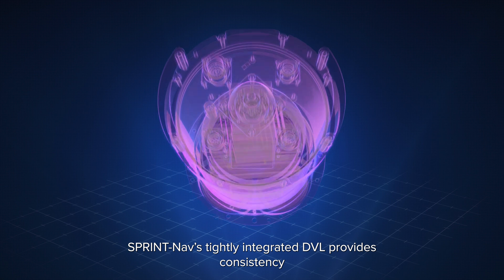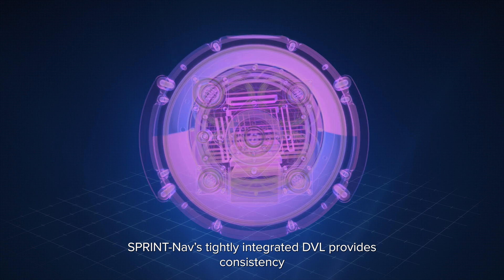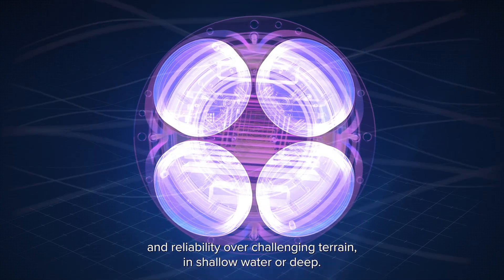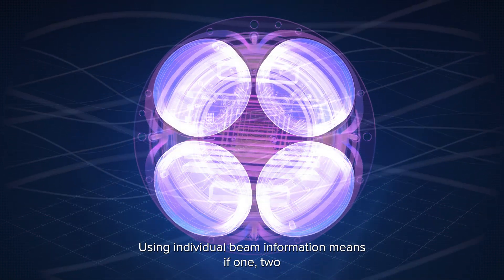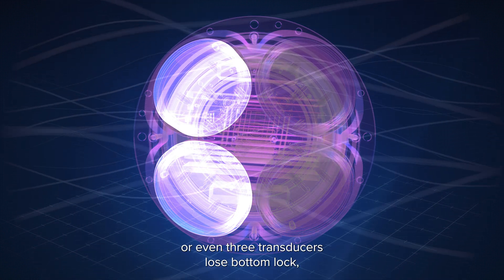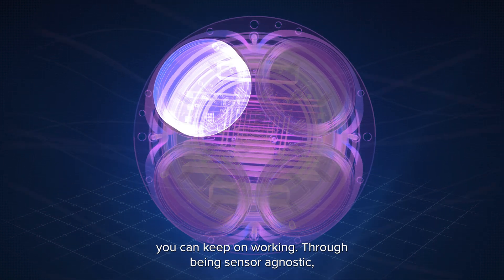SprintNav's tightly integrated DVL provides consistency and reliability over challenging terrain in shallow water or deep. Using individual beam information means if one, two or even three transducers lose bottom lock, you can keep on working.